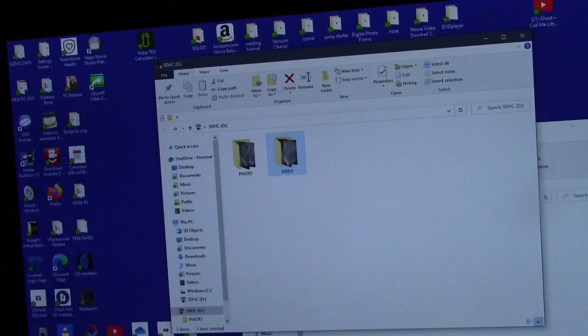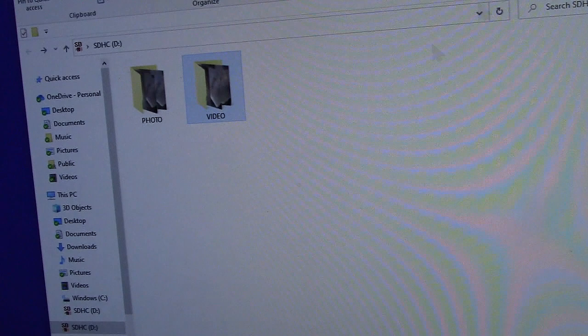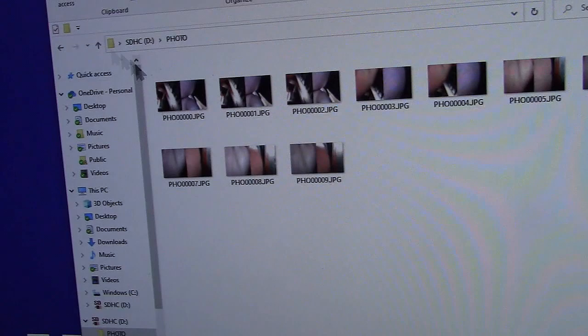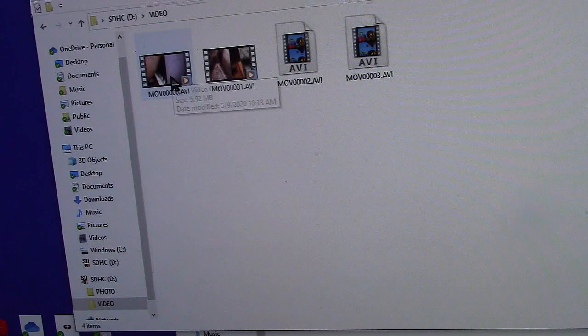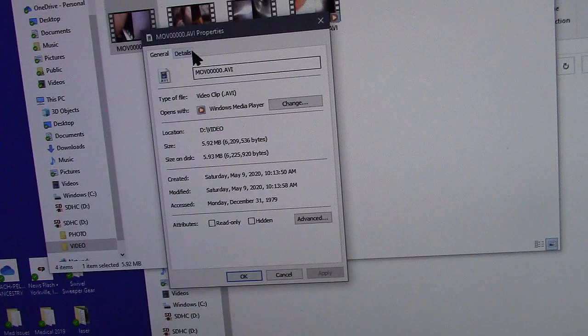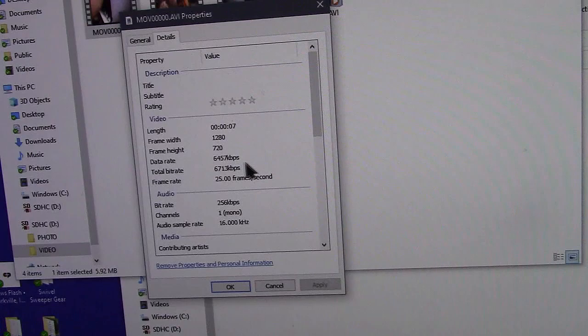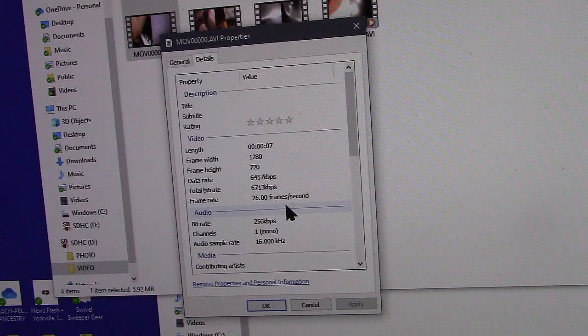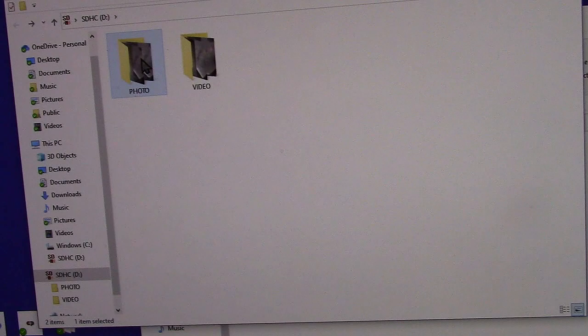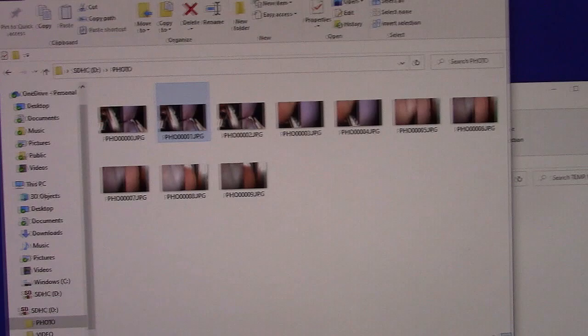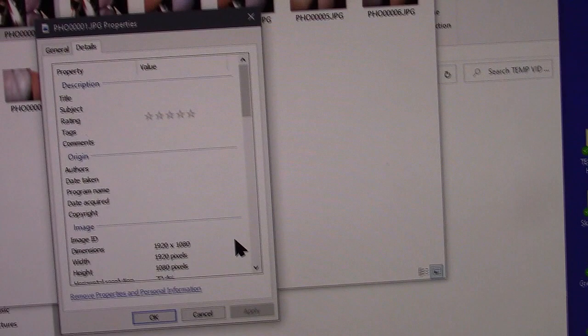So on the micro SD card I put on my computer, you get two files: you get the photo and you get the video. Let's take a look at the properties of this. So it's 1280 by 720 and about 6.4 megabits per second, 25 frames per second video. And let's take a look at the picture. The photo is 1920 by 1080, 72 dots per inch.